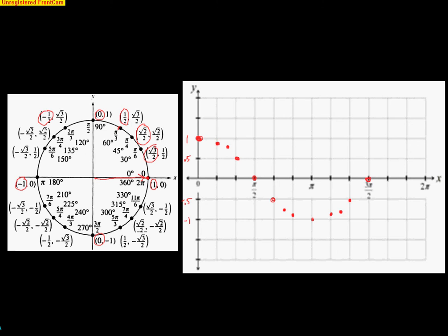At 7 pi over 6, we're at about negative 0.87. At 5 pi over 4, we're at about negative 0.7. At 4 pi over 3, we're at about negative 0.5. At 3 pi over 2, we're back to 0. So we've started up high at 1, declined all the way down through 0 to negative 1, and now we're climbing back up. At 5 pi over 3 we're back at positive 0.5.